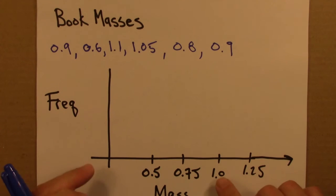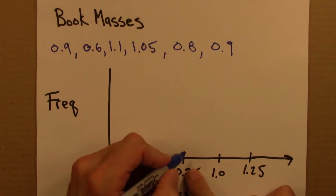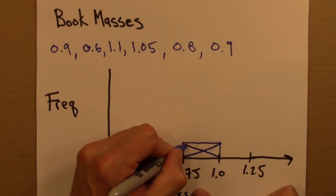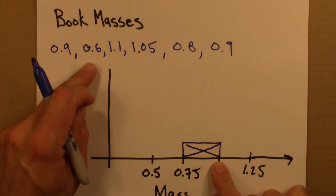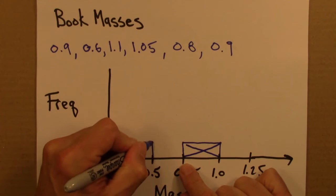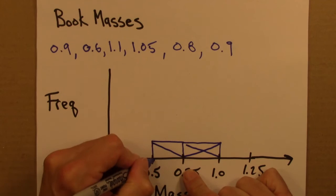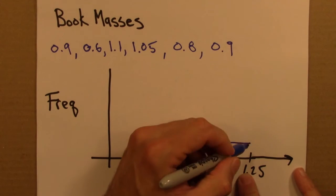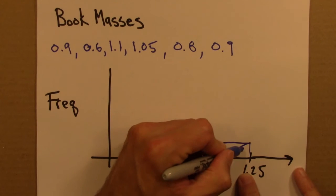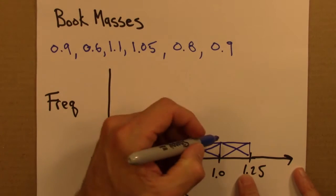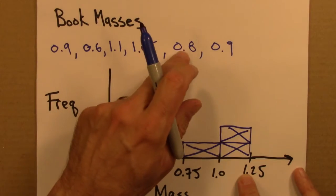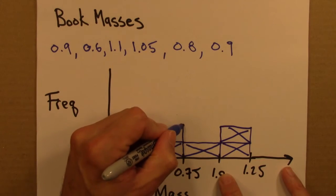So 0.9, I've got one that's between 0.75 and 1. 0.6, 1.1, that's one that's in here, 1.05, 0.8, and 0.9. Those both are in here.